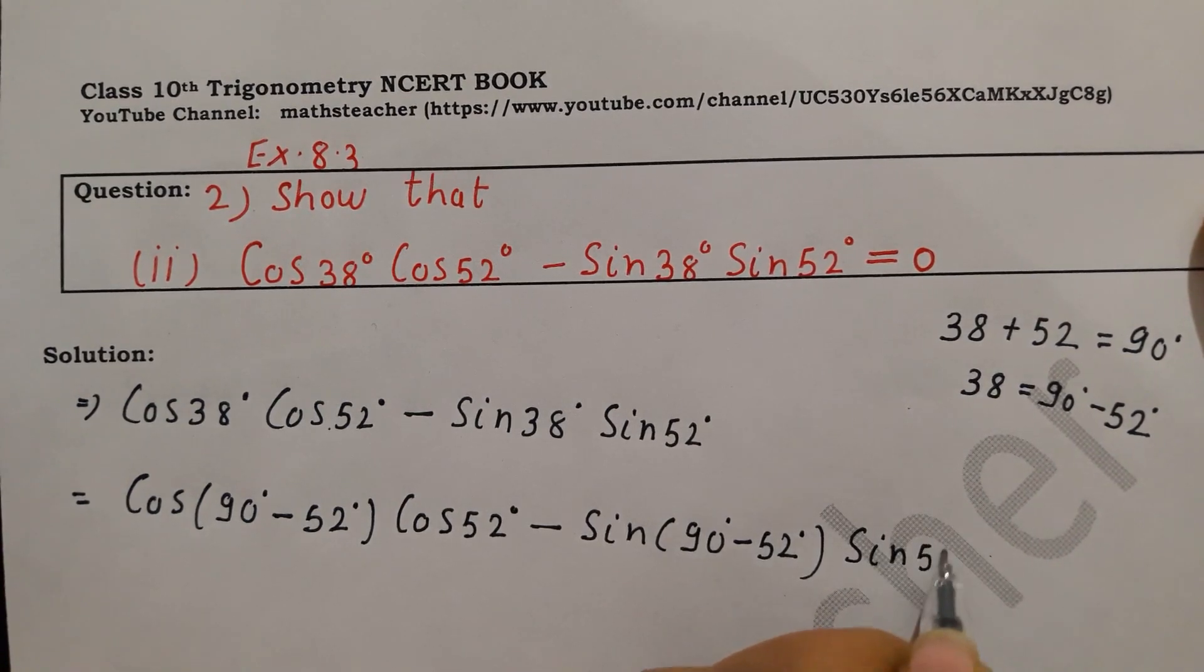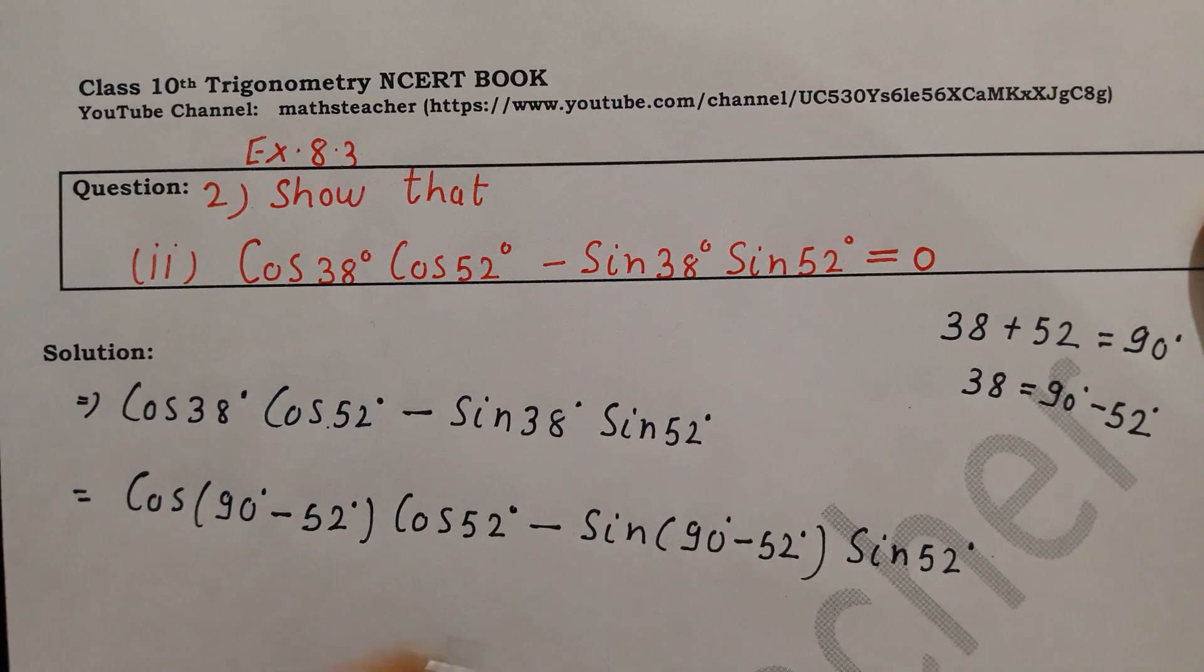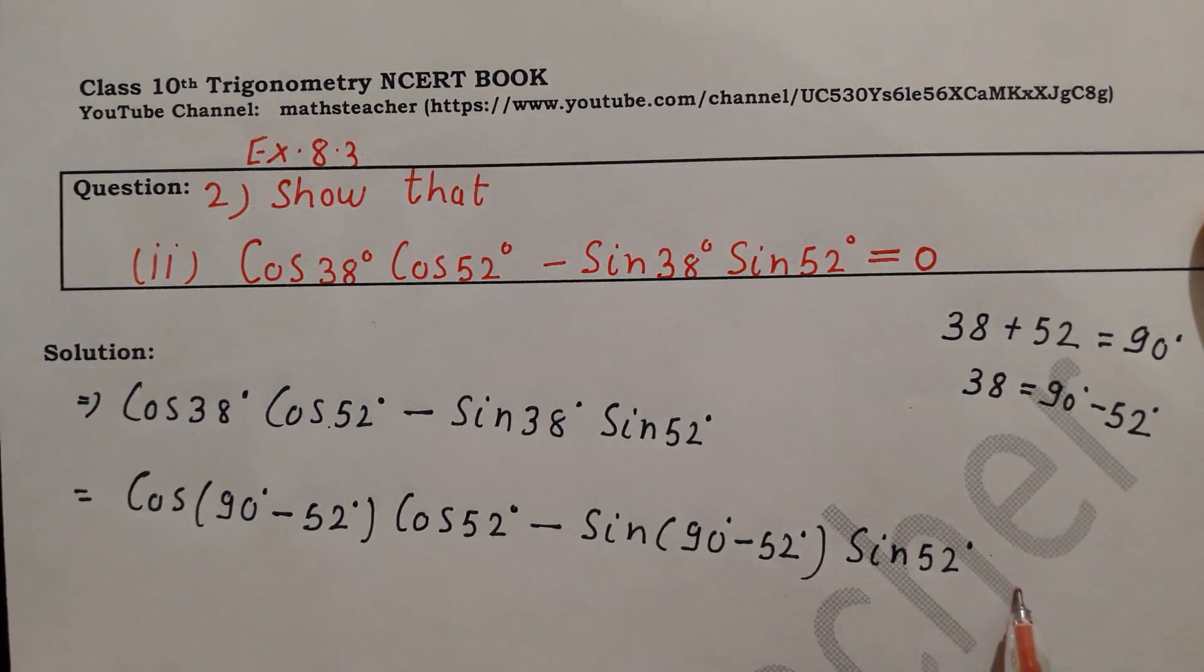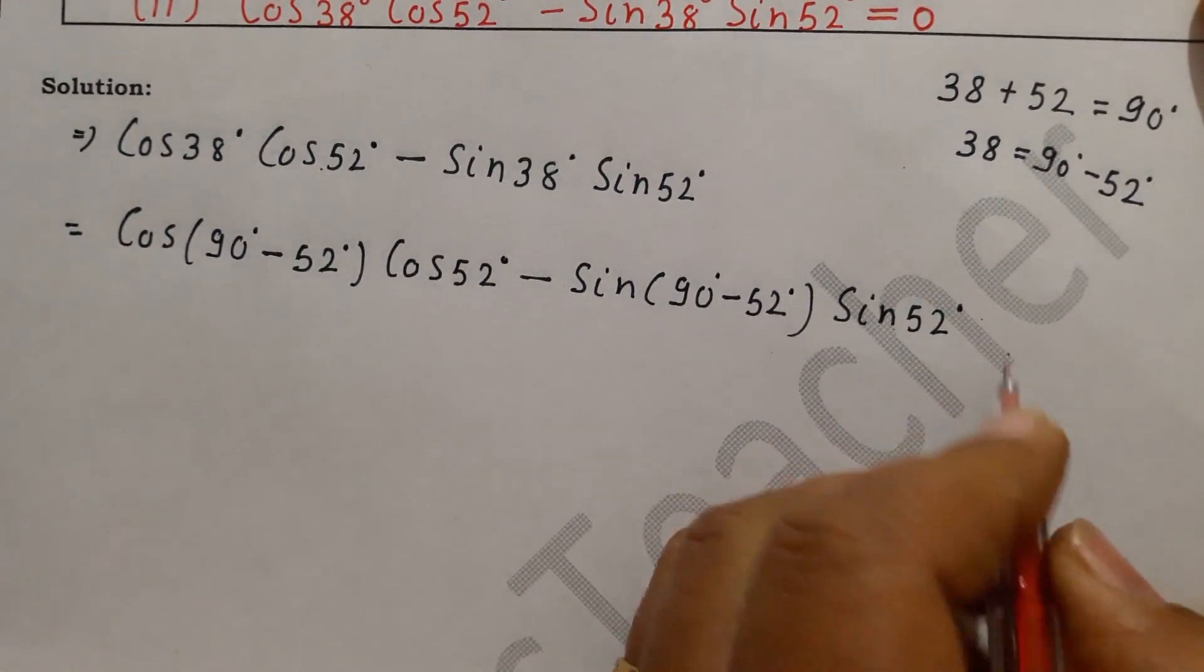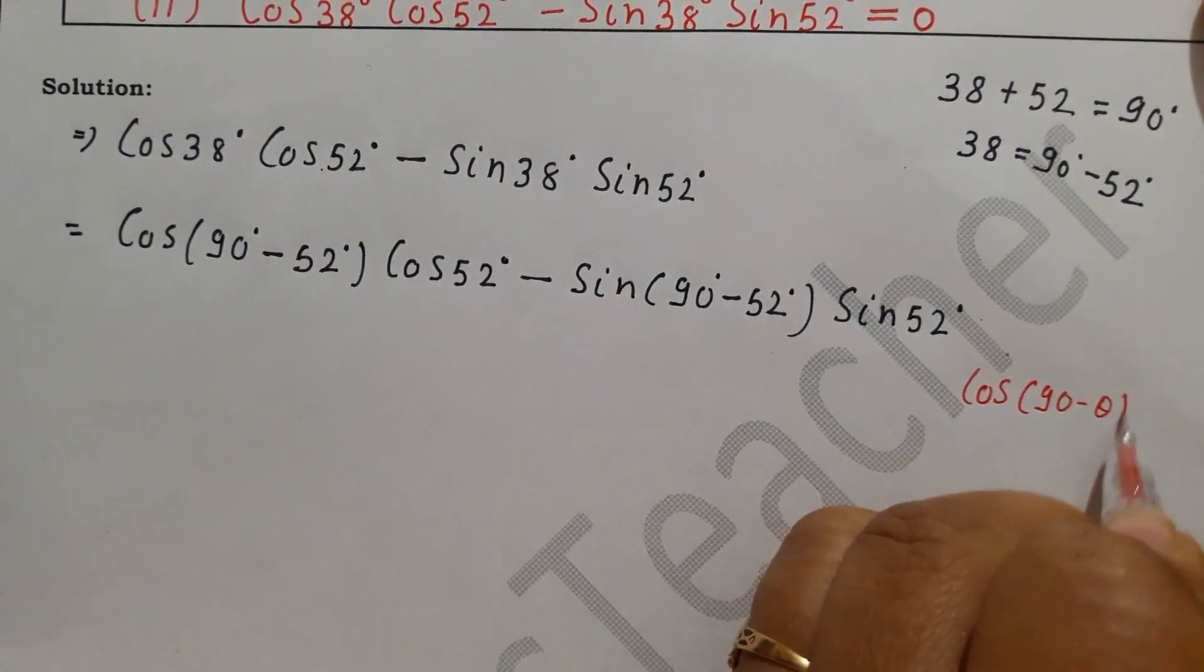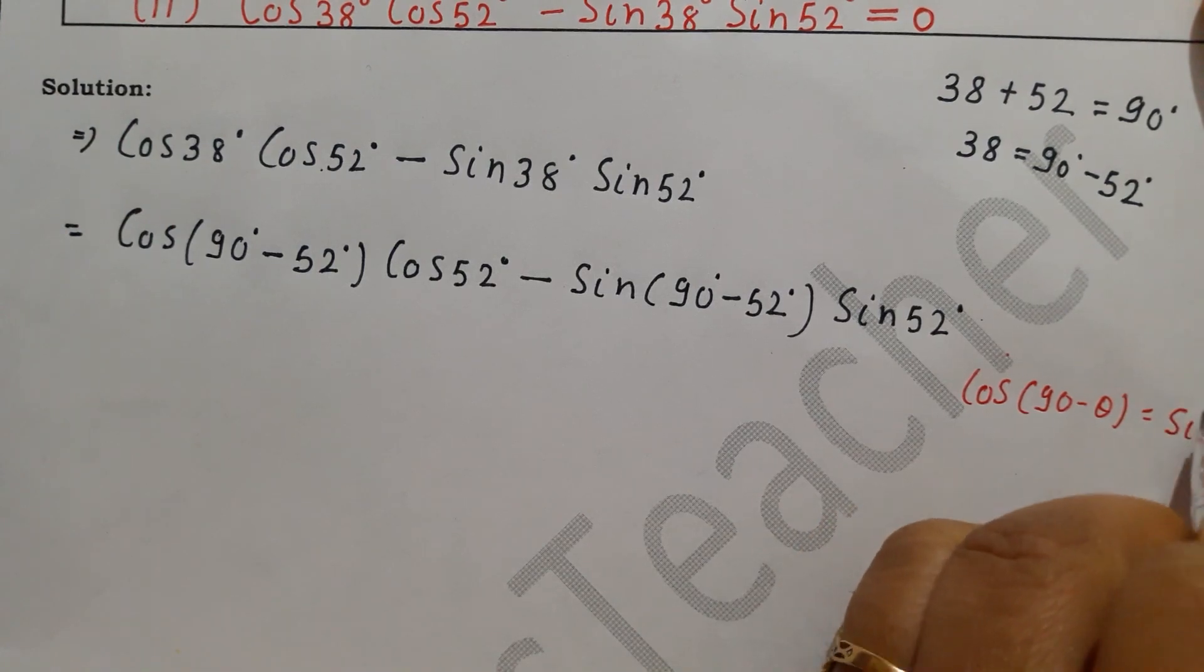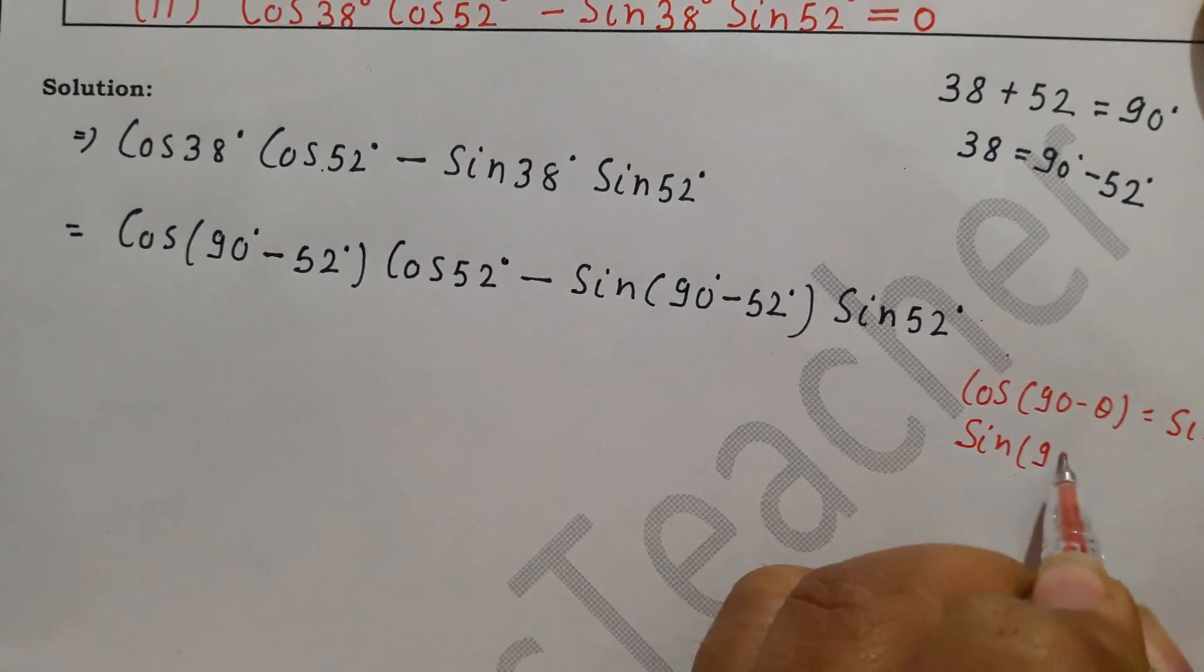52 minus sin 38 which is 90 minus 52, and the second as it is. Here with complementary angle ratio, cos(90° - θ) = sin θ, and sin(90° - θ) = cos θ.